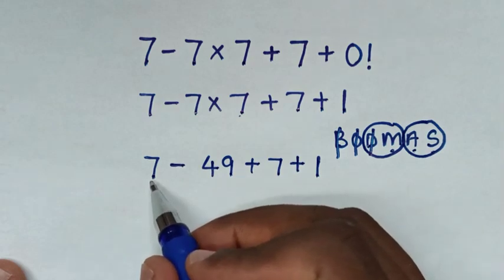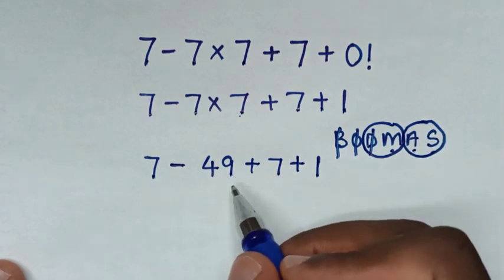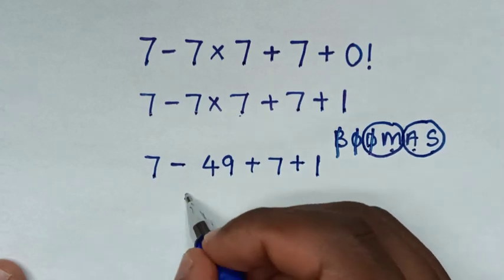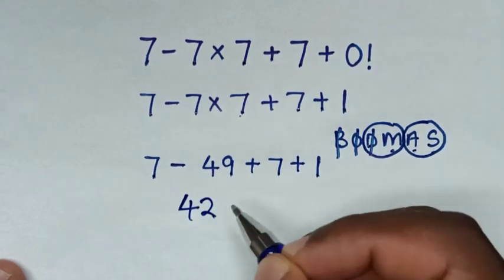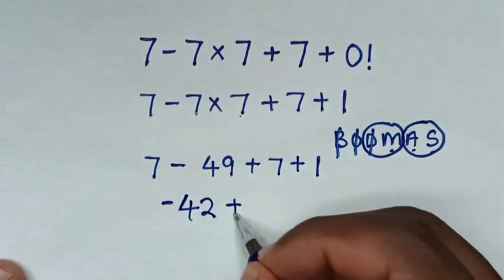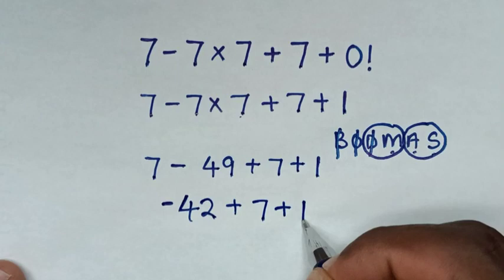So we'll start with the subtraction of 7 minus 49. 49 minus 7 is 42, but since 49 is larger, it will be negative 42, then plus 7 plus 1.